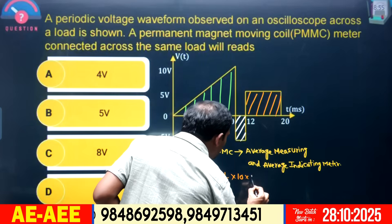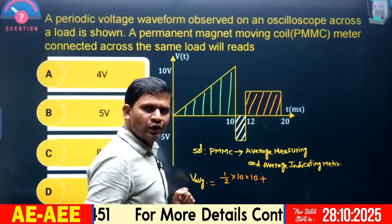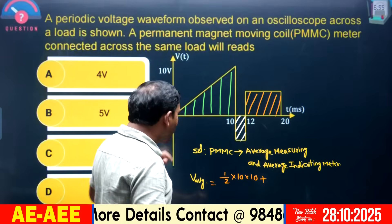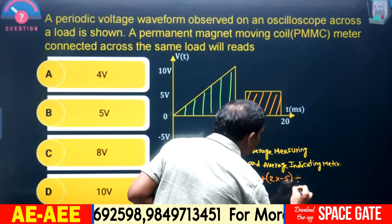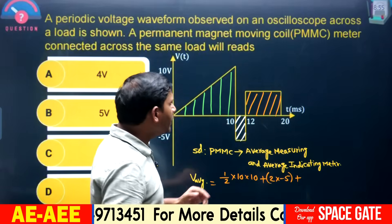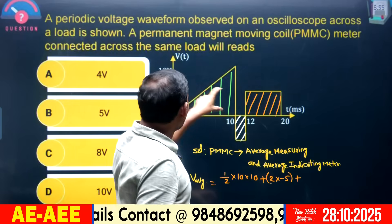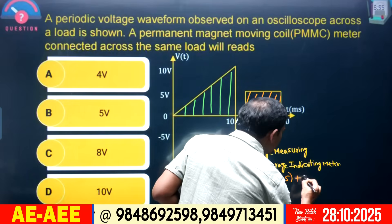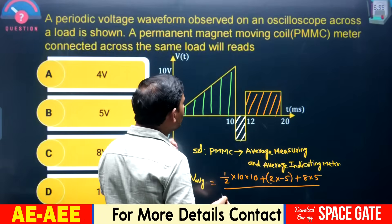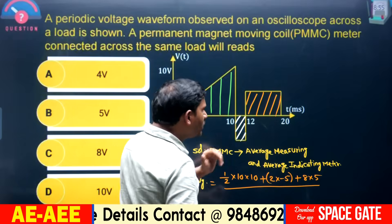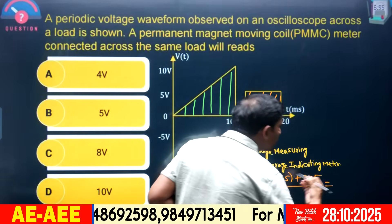Writing this once again: ½ × 10 × 10, then from 10 to 12 that is 2, times minus 5 — area under that section is 2 × (−5). The next section is 12 to 20, which is 8, with height 5, so 8 × 5. Then divide by the total time period — it is not a periodic waveform, so the total time is the time period you have to use.